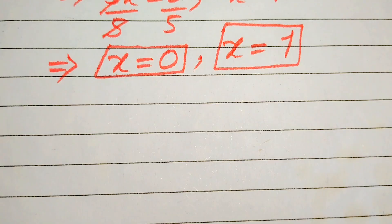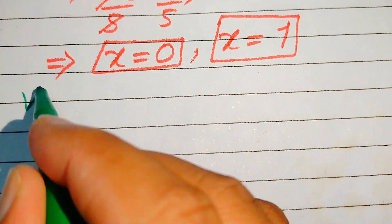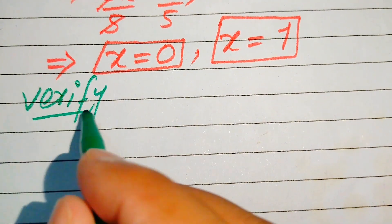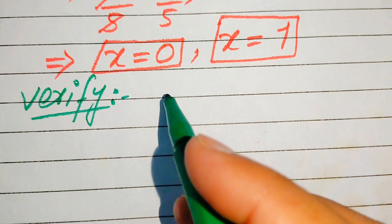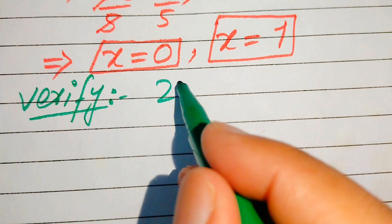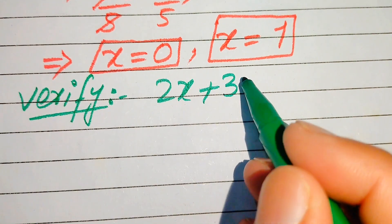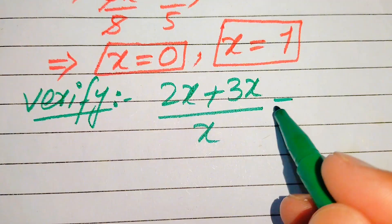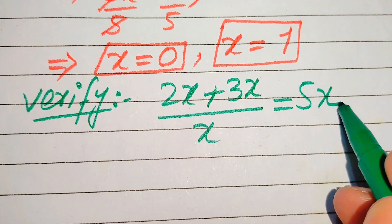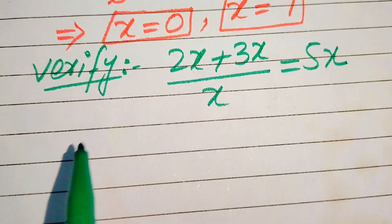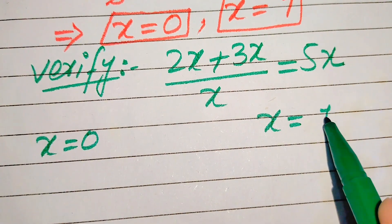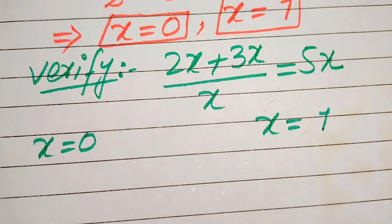In the first method we get two roots, and now in the next steps we need to verify whether both of these roots are solutions or whether one of the roots is an extraneous root. For verification we copy down the given question statement: 2x plus 3x divided by x equals 5x. On one side we will verify x equals 0, and on the other side we will verify x equals 1.